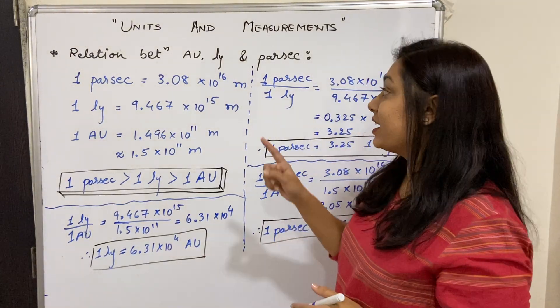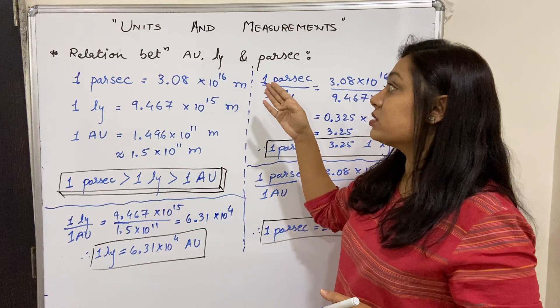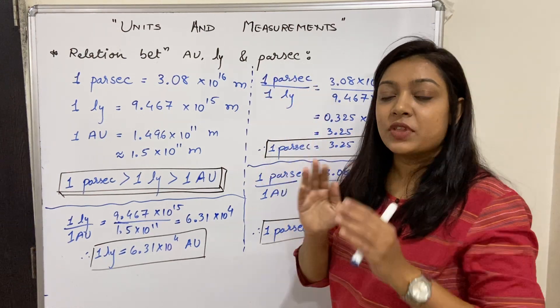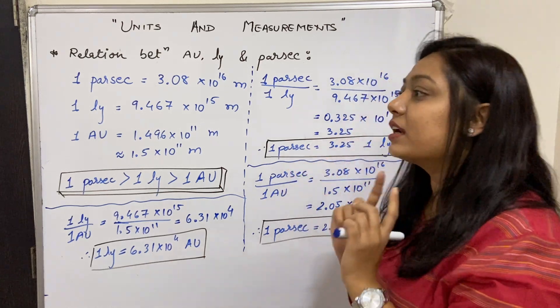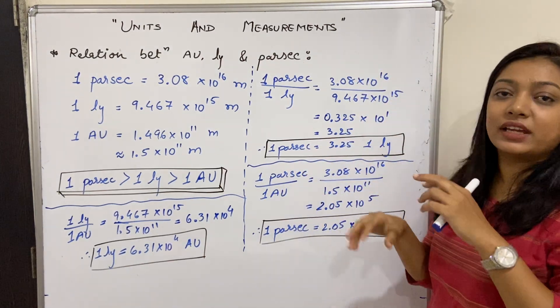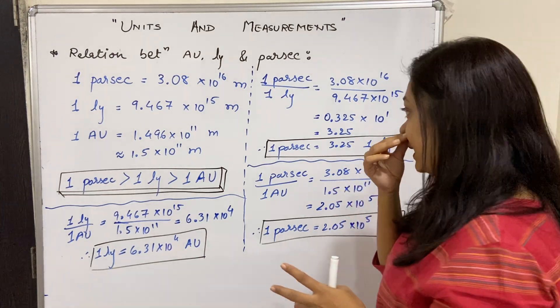So now finally we are comparing astronomical unit, light year, and parsec. What is the relationship between all three individually?